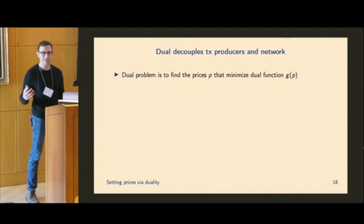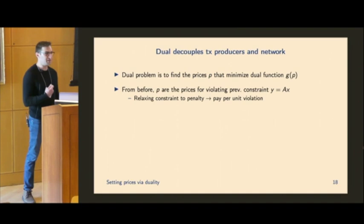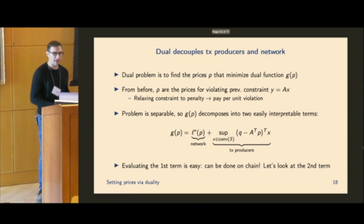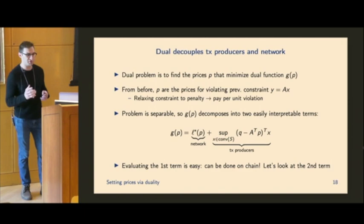Okay, so the dual problem is going to be to find the prices P, or penalties, that minimize some dual function G of P. These prices can be thought of as penalties for violating this constraint, that the resource utilization of the loss of the network is equal to kind of what's actually in the block. And this problem is separable, so G of P actually has a really nice interpretation. I'm not going to go through the derivation, but essentially you have two terms. One is this conjugate function of the loss L. This is something that's very easy to evaluate for the network itself. It's usually simple, usually closed form. And so that is kind of the network term. And then the next term is the supremum, which we're going to look at a little bit more closely.